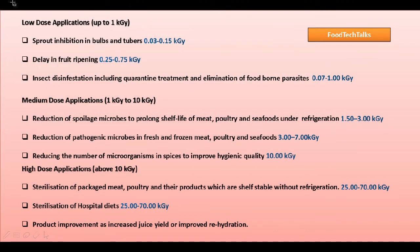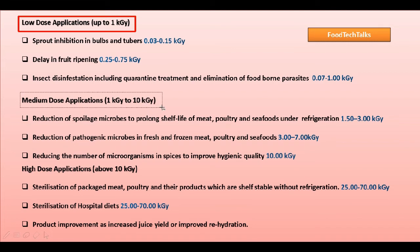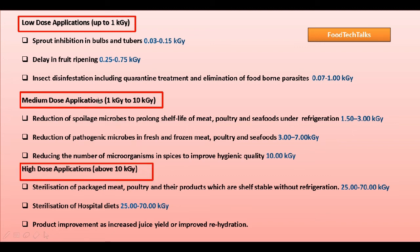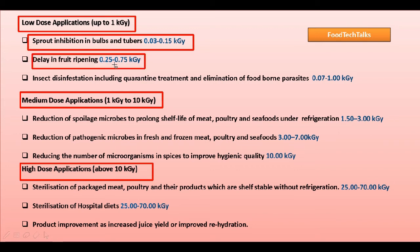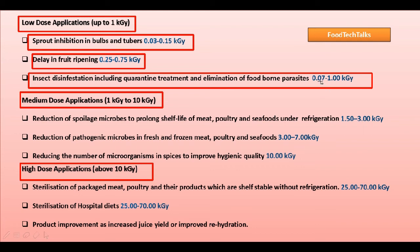Gamma rays are also classified based on dose applications: low dose application up to 1 kilogray, medium dose application from 1 to 10 kilogray, and high dose application above 10 kilogray. Low dose applications include: sprout inhibition in bulbs and tubers at 0.03 to 0.15 kilogray; delay in fruit ripening at 0.25 to 0.75 kilogray; insect disinfestation including quarantine treatment and elimination of foodborne parasites at 0.07 to 1 kilogray.